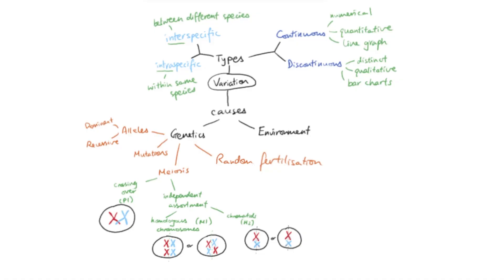So there you have it. With the concept of variation, we can consider two specific things: first, the different types of variation — we can consider it as inter or intraspecific variation, or think about it in terms of continuous or discontinuous variation depending on whether the data is numerical or in distinct category groups. In terms of causes of variation, the two major causes are the environment and genetics. Most variation will be caused by a mixture of the two, but within genetics we have further causes: alleles, mutations, meiosis, and random fertilization and sexual reproduction. When it comes to exam questions, sometimes they may ask about the type of variation and you might need to present data on line graphs or bar charts. For causes of variation, look at the question carefully, see specifically what variation they're focusing on, then consider what might be the causes for that particular variation.